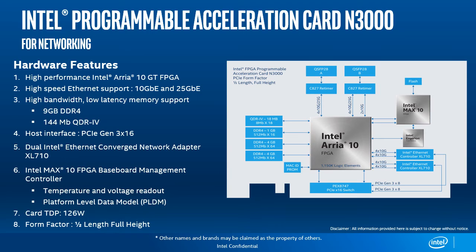Now let's discuss the specifics of the PAC N3000 platform. It is a half-length, full-height PCIe form-factor card that features hardware capabilities enabling up to 100GB of network traffic with low latency and high bandwidth memory. Most importantly, it features a large, over 1 million logic element Intel Arria 10 FPGA for highest flexibility in accelerating networking workloads. This platform has two integrated Intel 710 NICs that intelligently offload network packet processing tasks to the FPGA. We use an Intel Max 10 FPGA to serve as the Baseboard Management Controller, or BMC.